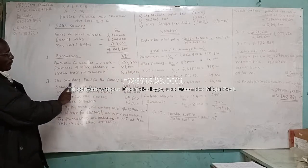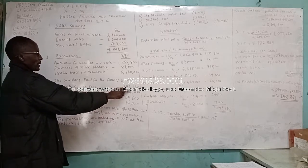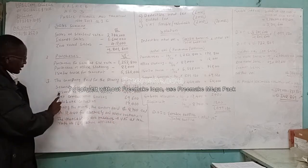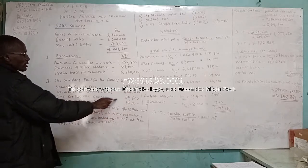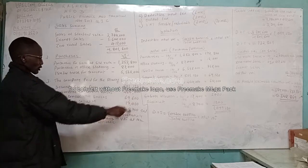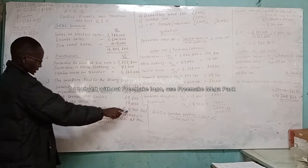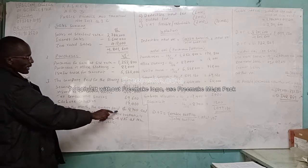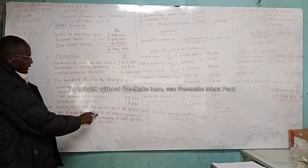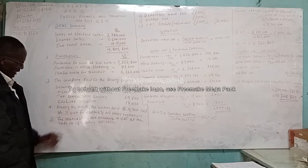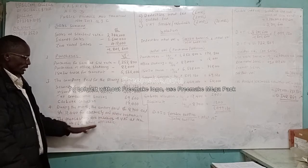Number 3, the company paid for the following services: security service fees 501,120, then insurance for company vehicles 464,000, tax consultancy services 69,600 shillings, then garbage collection 17,400 shillings. Number 4, during the month the company paid shillings 8,700 and shillings 10,440 for electricity and water respectively. Number 5, the transactions are inclusive of VAT at the rate of 16% where applicable.